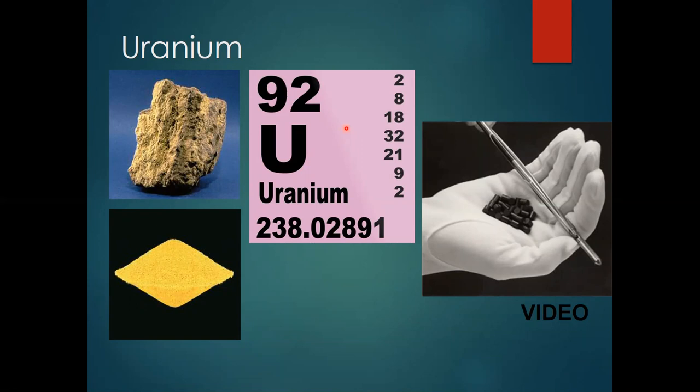This is the box on the periodic table that talks about uranium. Uranium, number 92, meaning that it has 92 protons, and approximately 238, which is its atomic mass — in other words, the addition of its protons and neutrons. This number is going to be important on the next slide.